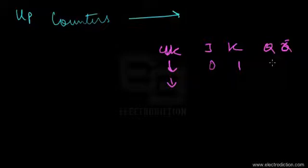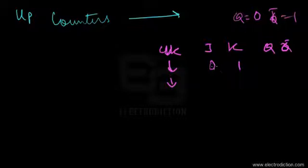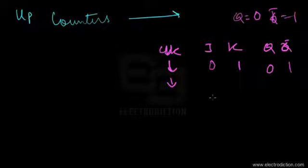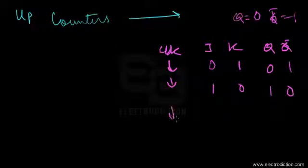If the previous state of the flip-flop had Q equals zero and Q-bar equals one, then upon the clock signal with J=0 and K=1, the output remains zero — it stays in the same state. If J and K are both zero, the output remains in whatever state it was previously. If both J and K inputs are at logic level one, the outputs just keep toggling.